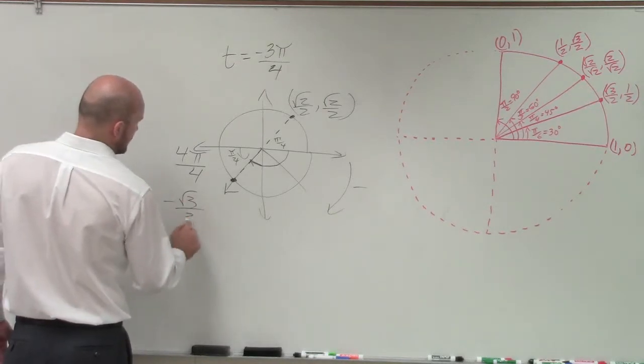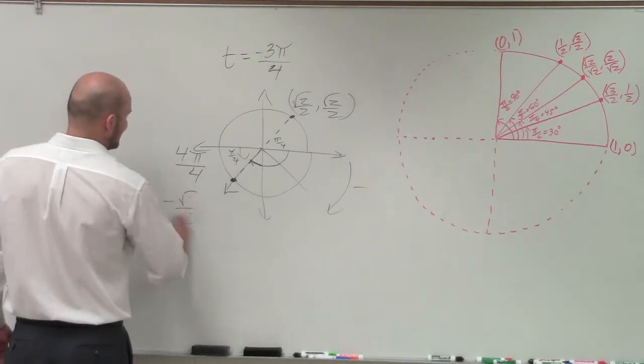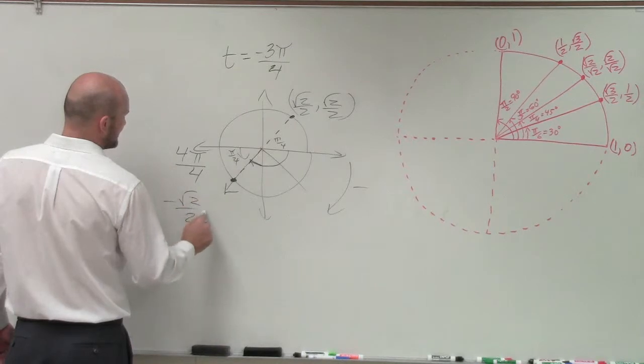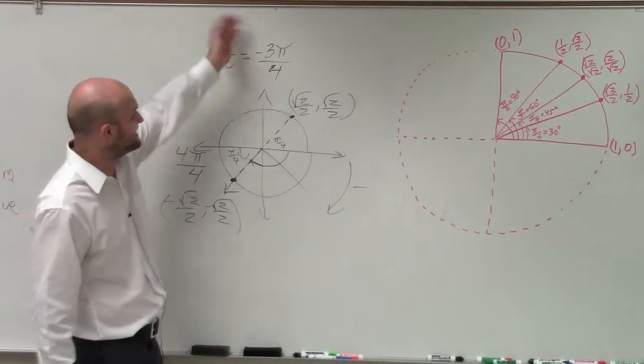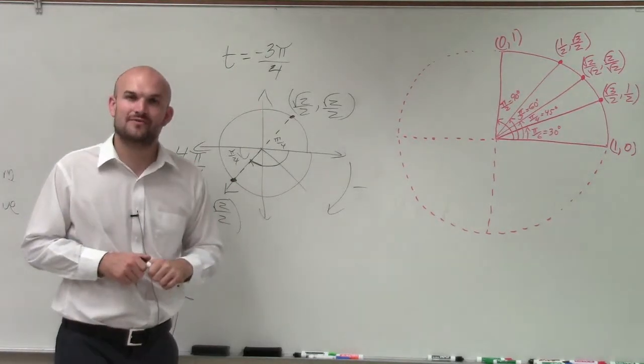So that's going to be negative square root of 2 over 2, comma negative square root of 2 over 2. And there you go, ladies and gentlemen. That is your coordinate point at the angle negative 3π over 4. Thanks.